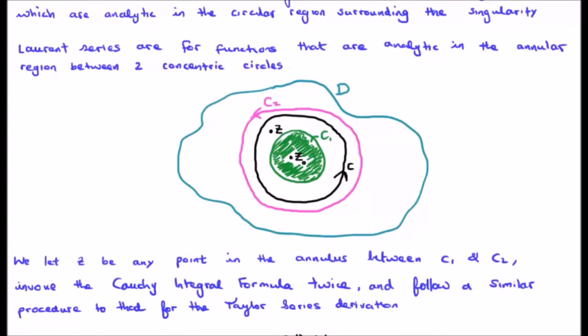We let z be any point in the annulus between C1 and C2. Note that C1 is the inner contour. And we invoke the Cauchy integral formula twice and follow a similar procedure to that used for the Taylor series derivation. With the Taylor series derivation we only had one contour and we let that shrink down to z zero. Now we're going to have two contours, and we're going to look at the difference between them, because that's what's going to give us this annular region in here.